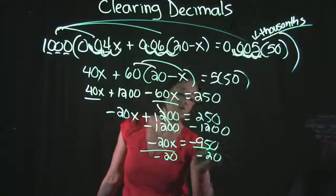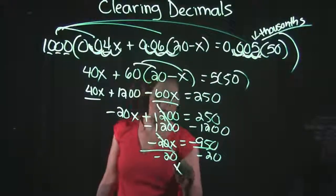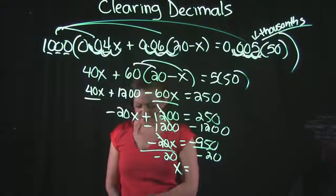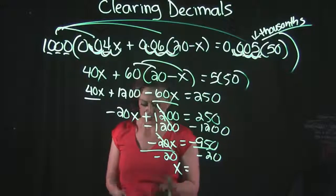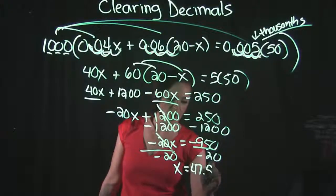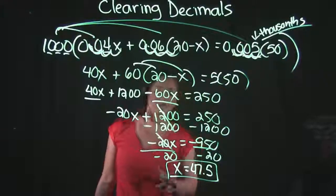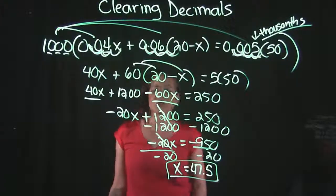And dividing both sides out by the coefficient, I get that x is equal to 47.5 as my solution here to this equation.